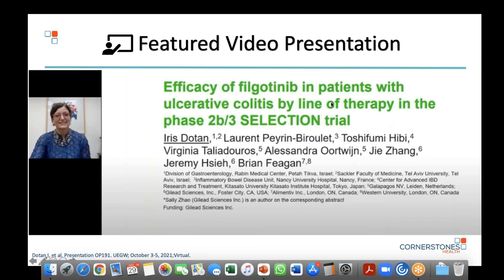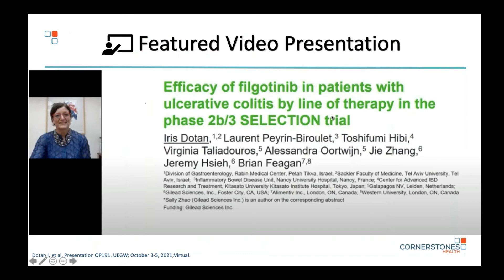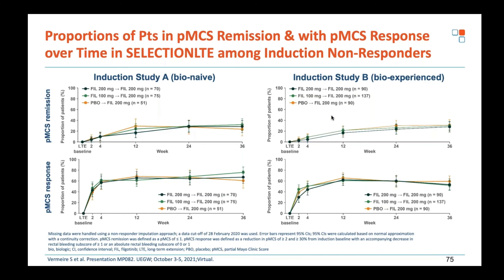Summarizing the filgotinib data: the 200 mg dose clearly appears more effective than 100 mg. One limitation of the trial design, in contrast to the tofacitinib trials, is that a 200 mg induction / 100 mg maintenance arm was not included — which would have been clinically informative given the known dose-response relationship for both efficacy and side effects with JAK inhibitors. This flexibility would have been particularly useful.